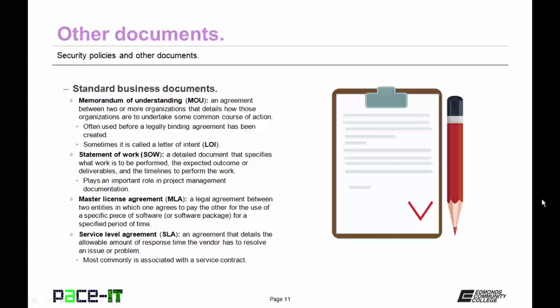There are some standard business documents that you should be familiar with. The first one is the Memorandum of Understanding, or MOU. It's an agreement between two or more organizations that details how those organizations are to undertake a common course of action. An MOU is often used before a legally binding agreement has been created. Sometimes the MOU is called a Letter of Intent, or LOI.